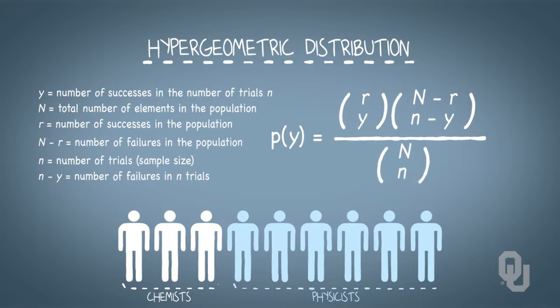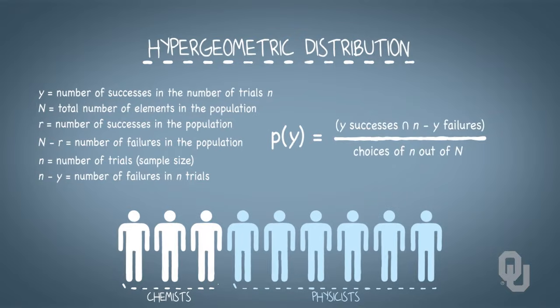Using the language of events, another way to think about this probability is with an intersection statement in the numerator.